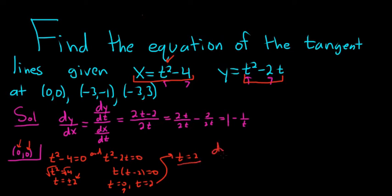So now we can find the slope. dy/dx at the moment when t is equal to 2 is equal to 1 minus 1 half, which is 1 half. And that's our m, that's the value of our slope.